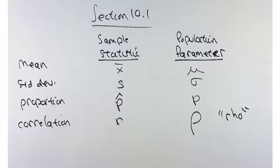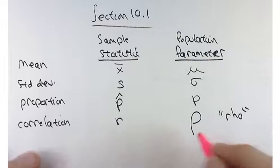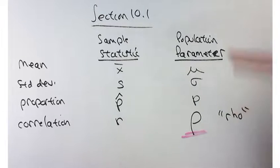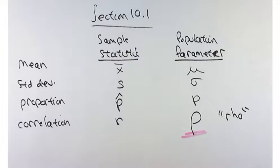In section 10.1, we're going to continue learning our Greek letters. The new Greek letter here is rho, spelled R-H-O, pronounced 'row.' It's the latest population parameter that we're going to be testing, and this one tests whether or not there's a linear correlation between two variables.